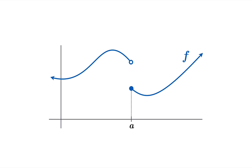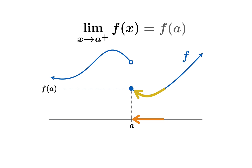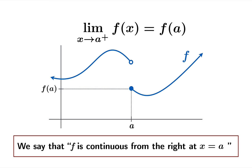Having said that, we can sort of salvage half the continuity. You'll notice that as you approach the argument a from the right, the limiting value does match the function value, so the limit of f of x as x approaches a from the right actually equals f of a. In this case we say the function is continuous from the right at the argument a.